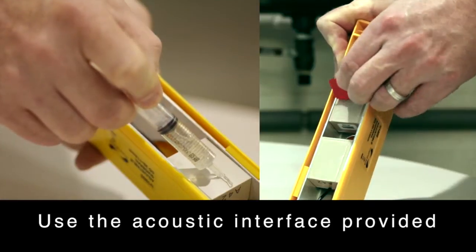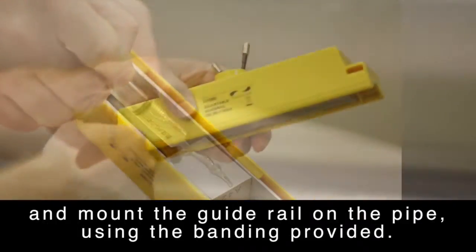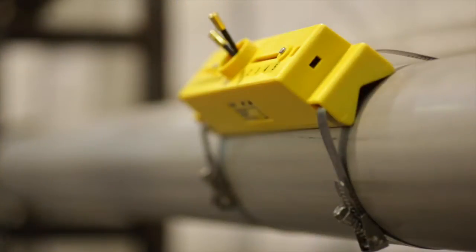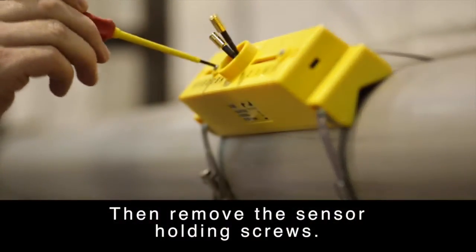Use the acoustic interface provided and mount the guide rail on the pipe using the banding provided. Then remove the sensor holding screws.